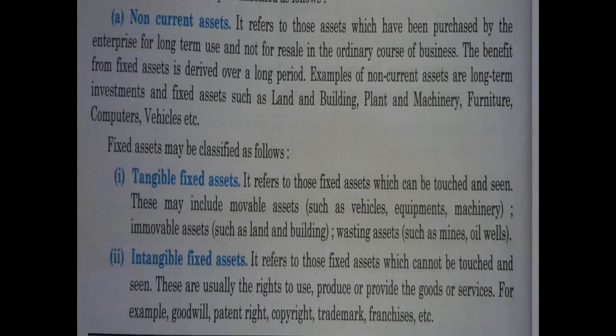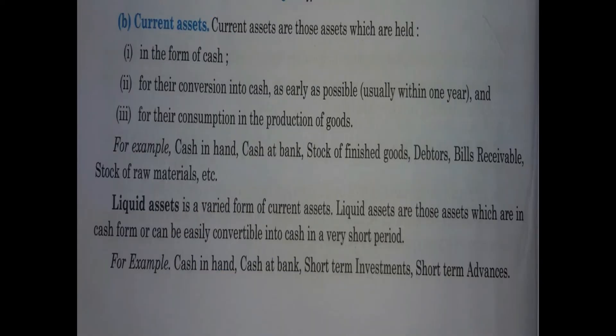Fixed assets are divided into two parts. Tangible fixed assets are those which we can physically touch or see, like land and building. Intangible fixed assets are those which cannot be touched or seen — they are usually the right to use, produce, or provide goods or services. For example, goodwill, which is the reputation of the business, patent rights, copyright, trademark, or franchises.